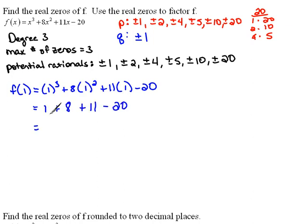See, this would be 9 and 11 would be 20, minus 20 is 0. Well, how about that? 1 is a zero of the function. So we just found an x value of 1 is one of our zeros.